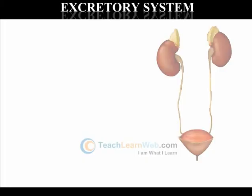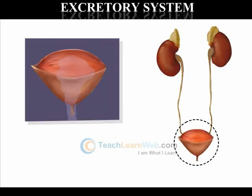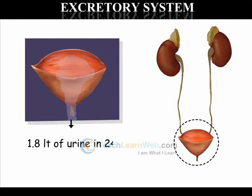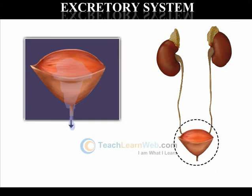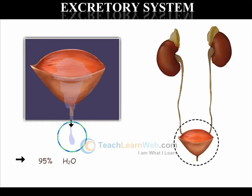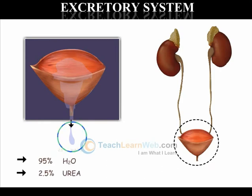An adult human being passes about 1 to 1.8 liters of urine in 24 hours. Urine consists of 95 percent water, 2.5 percent urea, and 2.5 percent other waste products.